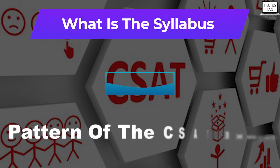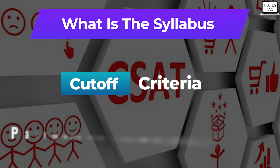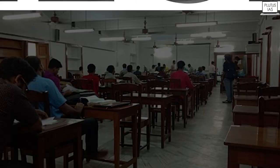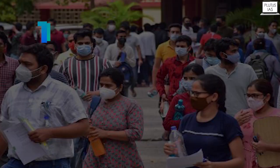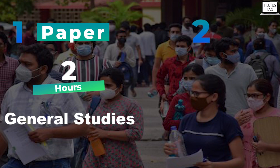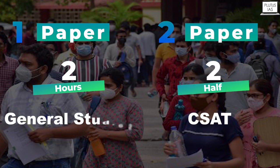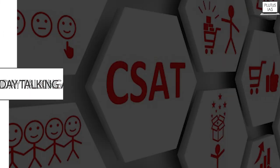What is the syllabus, cutoff criteria, and pattern of the CSAT examination? So Aditi, if we look at the civil services preliminary examination, we have two sets of question papers. The first question paper is of two hours and that is for general studies. The second paper in the second half is for the civil services CSAT examination. So today we are discussing about the second paper of the civil services prelims, that is the CSAT examination.